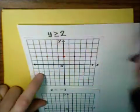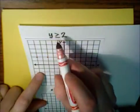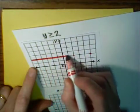Now, the question is, do I do it solid, or do I do a dashed line? Well, there's an equal to sign here. y is greater than or equal to 2. So, I'm going to have a solid line.